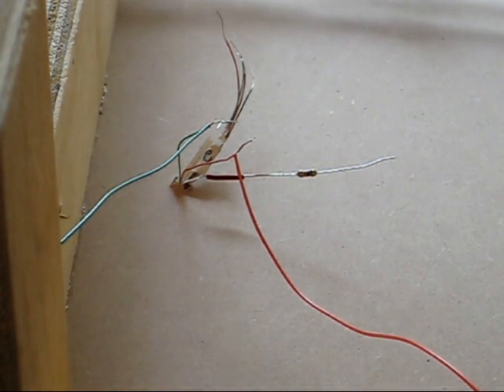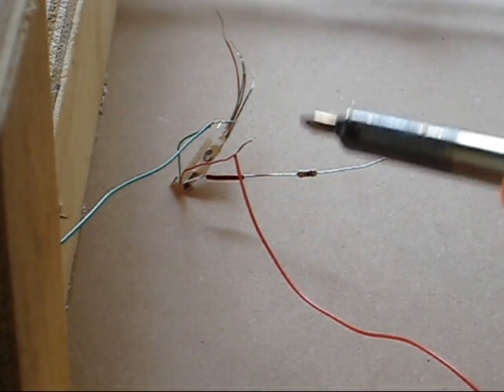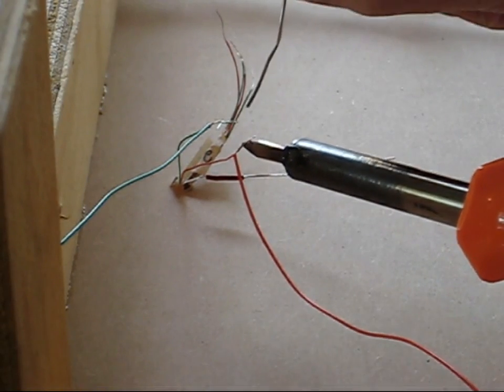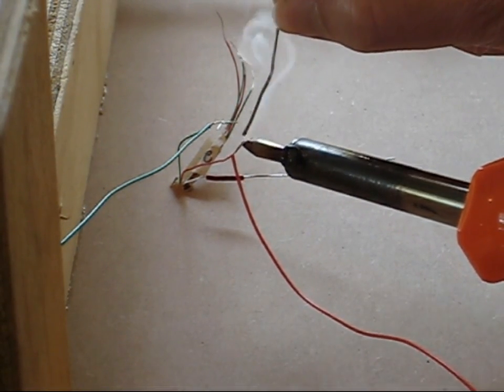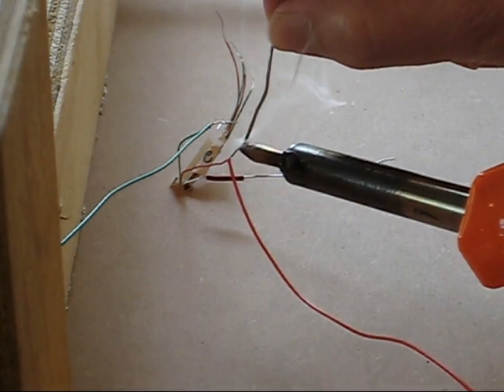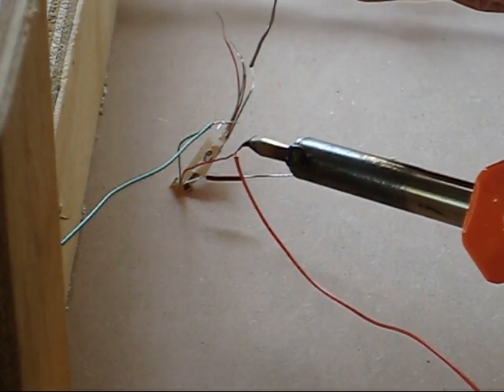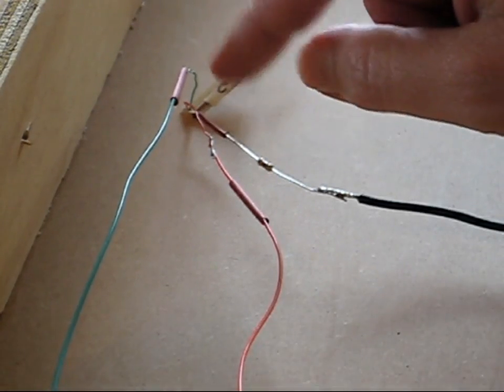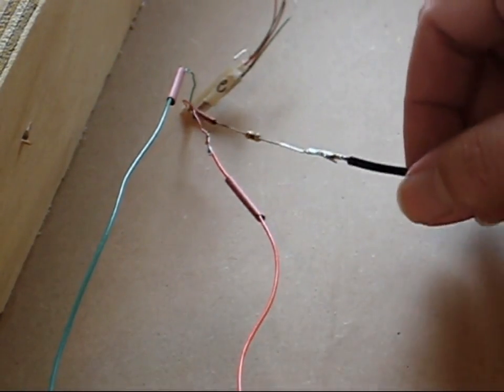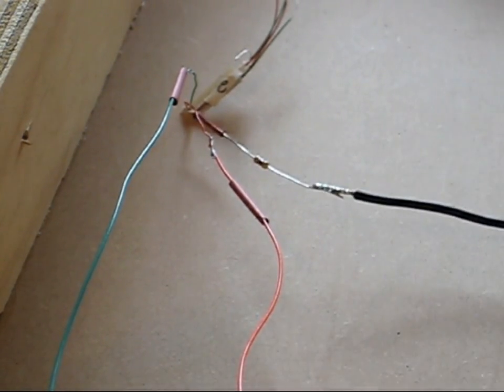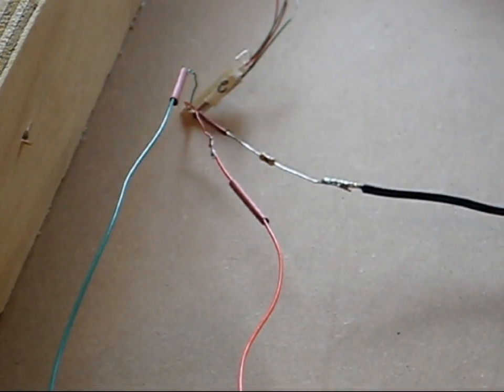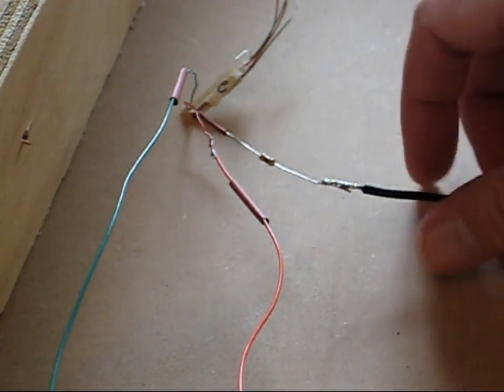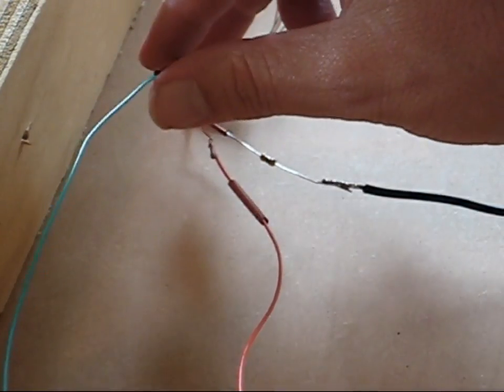Alright, so I've got the green, the red, and now I've got a heavier wire here on the resistor. This wire will be going straight to the bus line. I've got this little shrink tube tubing.